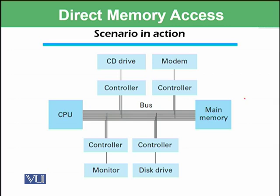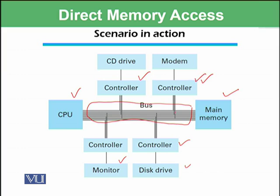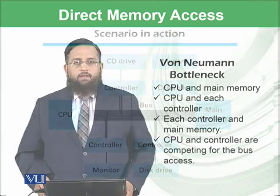Here is a scenario shown on this slide. We have a CPU and main memory connected by a bus, which we discussed in a previous module. There is a controller available for all of the devices. The CPU can ask a controller to perform certain input and output tasks using this bus. The controller can use the bus during time slots when it is not being used by the CPU. However, if both the CPU and the controller are using the same bus at the same time, we will have a problem — known as the Von Neumann bottleneck.